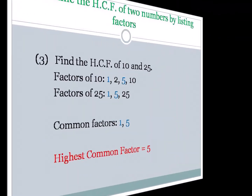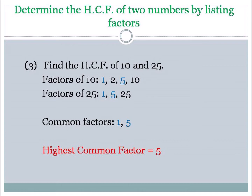Let's go back to listing factors. Find the HCF of 10 and 25. Factors of 10: 1, 2, 5, and 10. Factors of 25: 1, 5, and 25. The common factors, highlighted in blue, are 1 and 5. Picking the higher number, the highest common factor of 10 and 25 is 5.